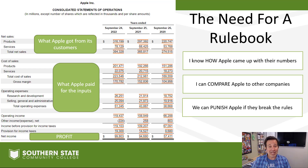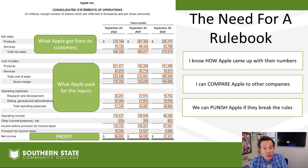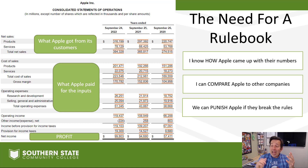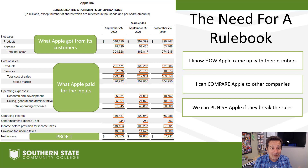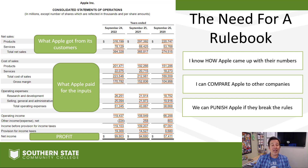And then finally, we can punish Apple or any other company if they break the rules. I can't punish a company if there's no rulebook. Having a rulebook and making sure everybody is playing by the same rules means that if somebody gets out of line, the SEC can come in and punish them for not following the accounting rulebook. So it's very important to have an accounting rulebook.